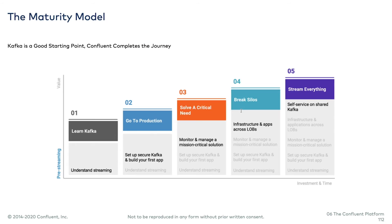As you, as an organization, as a developer, mature in your use of event streaming, you start at learning Kafka, then you go to production, and then you find some application that really works and you scale it, and then you start looking — well, there are these silos in the organization. This worked well for us. Another part of the organization does the same thing, and you get connectivity of that data through Kafka between silos.